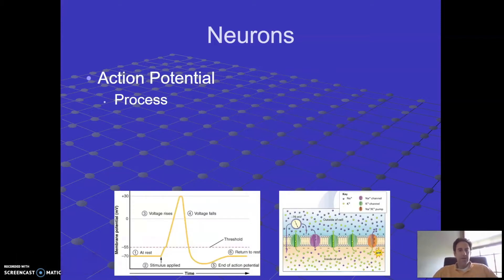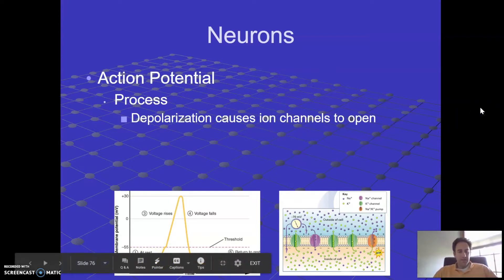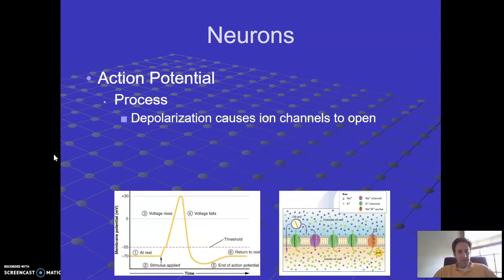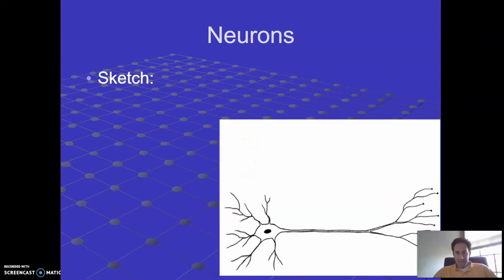Let's put it all together. Step one: depolarization causes the ion channels to open. At rest, we're at minus 70. For reasons we'll talk about later, the cell can be depolarized — there's a little increase as that value gets more positive — and this causes the ion channels to open. Now, which ion channel opens first, sodium or potassium? The sodium ion channels open quickly and the potassium ion channels open slowly.